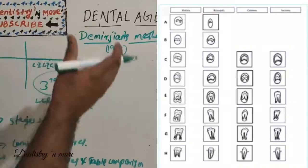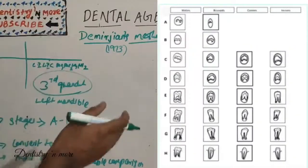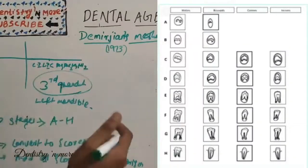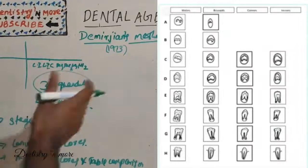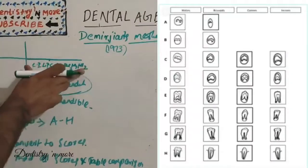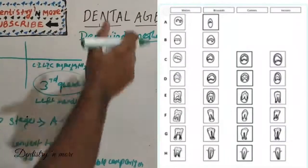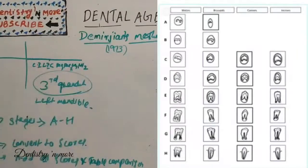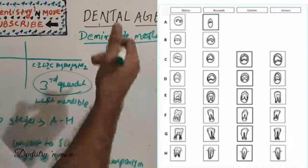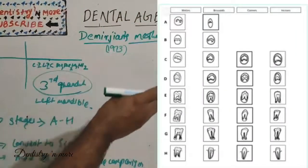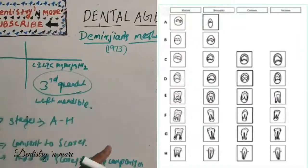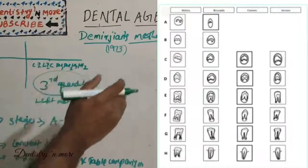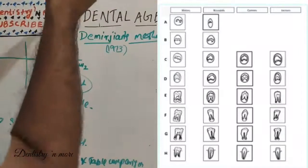Stage E: root length remains shorter than the crown height; walls of the pulp chamber are straight and pulp horns have become more differentiated than in the previous stage. Stage F: walls of the pulp chamber now form a triangle and root length is equal to or greater than the crown height; in molars, the bifurcation has developed sufficiently to give the roots a distinct form. Stage G: walls of the root canal are parallel but the apical end is still open. Stage H: root apex is completely closed and the periodontal membrane surrounding the root and apex is uniform in width throughout.